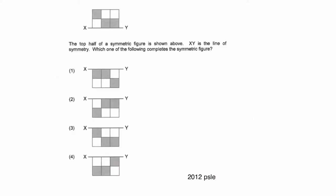The top half of a symmetric figure is shown. XY is the line of symmetry. Which one of the following completes the symmetric figure? It's easier because the line of symmetry is already given. So if we were to draw boxes at the bottom, we match which one is the answer. According to equidistance from the line of symmetry, certain squares should be shaded. The last shaded square at the top is two squares away from the line of symmetry, so the bottom one two squares down should be shaded. You match your answer and find number two is correct.